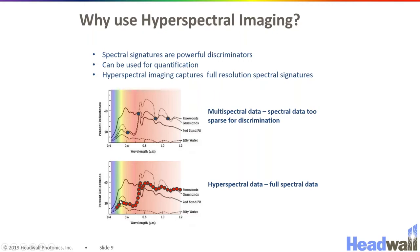However, if you have a complete and continuous spectrum, you can use the spectral shape to identify these different objects, and you don't need to worry about whether or not the intensity at the bands you happen to have gives you enough information to chemically discriminate the objects.